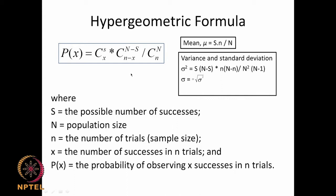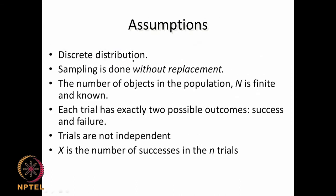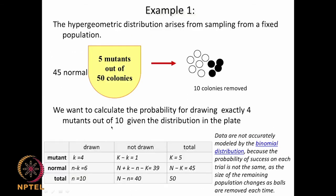The sample size is reasonably close and comparable to the population, unlike the normal. It is a discrete distribution because sampling is done without replacement — you take it out and there is no replacement. N is finite and known. Each trial has exactly two possible outcomes: success or failure, such as picking black or white balls. The trials are not independent, and x is the number of successes in n trials.